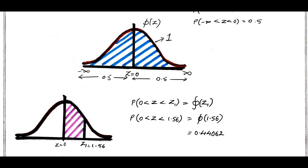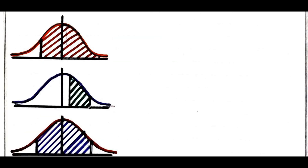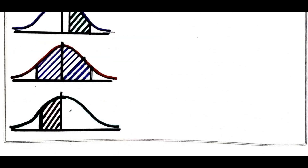To find the area between 0 to z1, we can make use of the calculator by using Q of z1, whatever the value of z. You can find out any value of z1. Similarly, I will go with the next type, which involves a negative value.